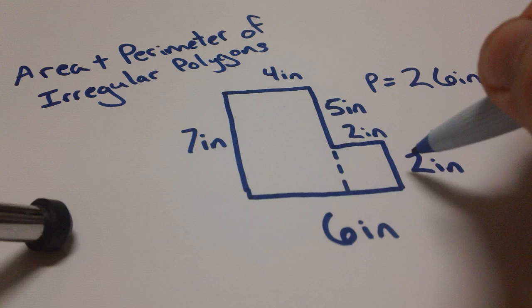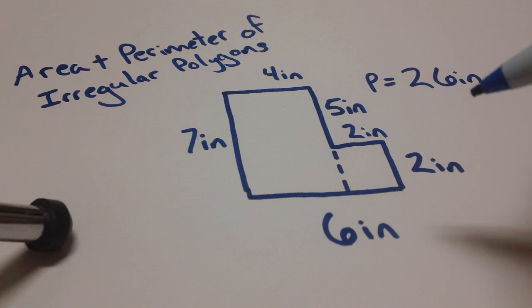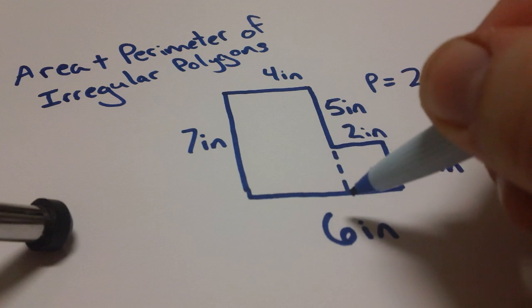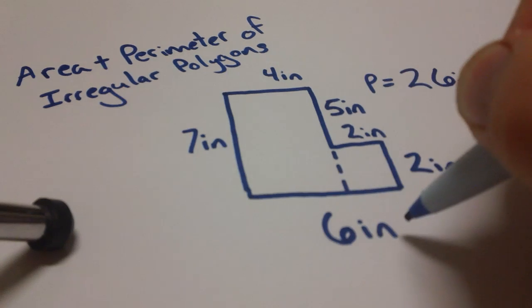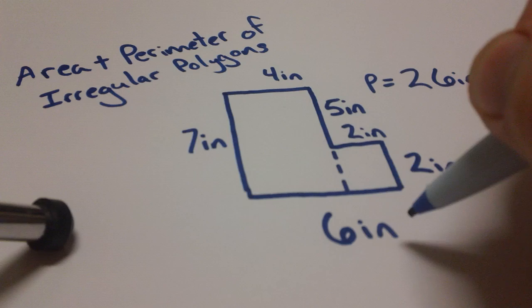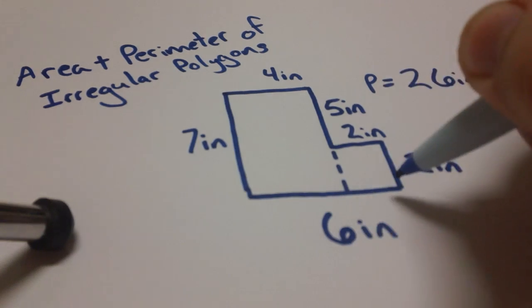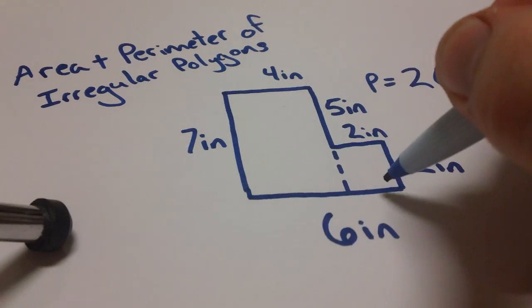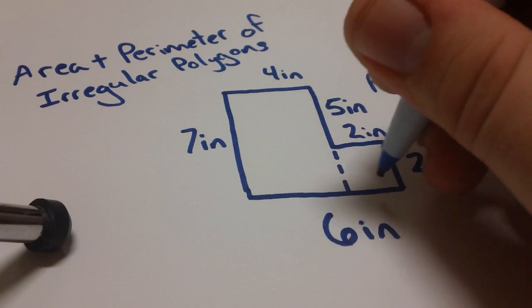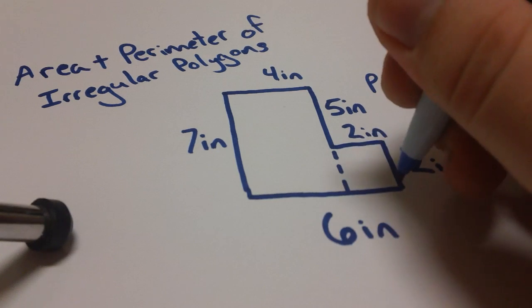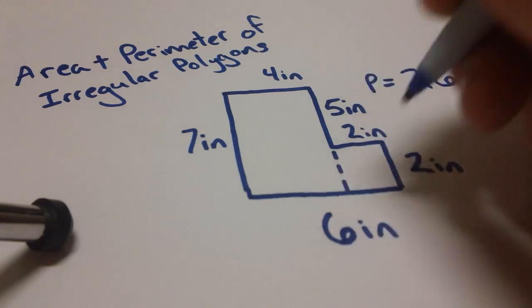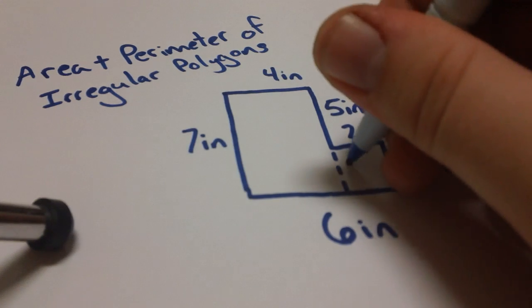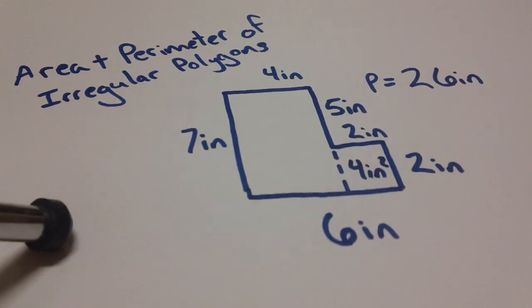So now what we can do is find the area of each of these individually and then add them together. This one here is going to be pretty simple. Two inches by two inches. Be careful that you don't mistakenly use the wrong side length though. Sometimes I see people accidentally use six inches here or something. But you have to remember that six inches represents the side all the way across. And we are only looking at this small box right here. So two inches by two inches, that's going to give us four inches squared, right?